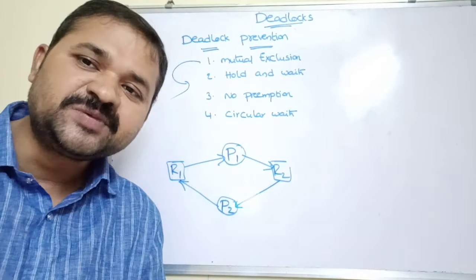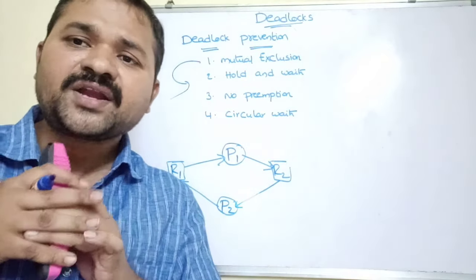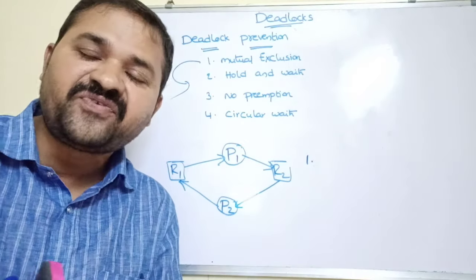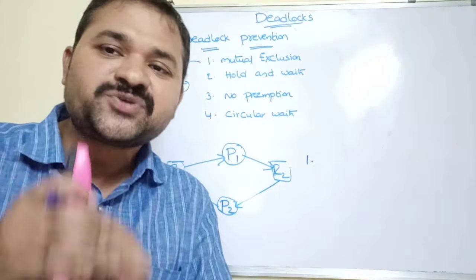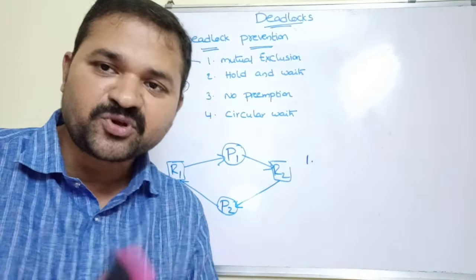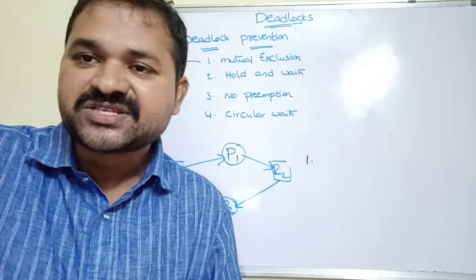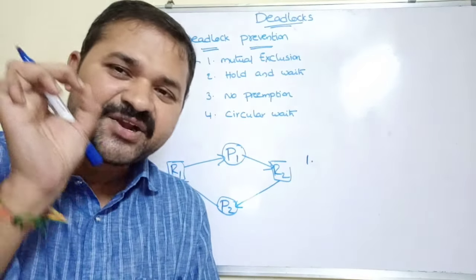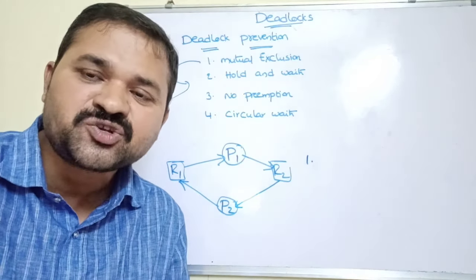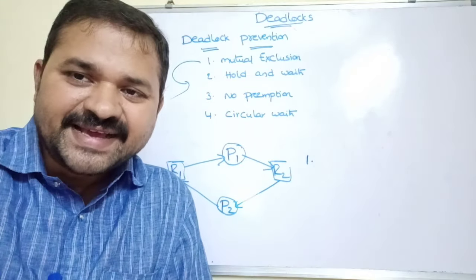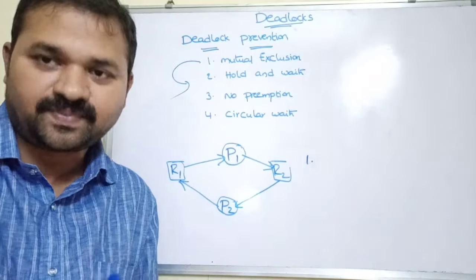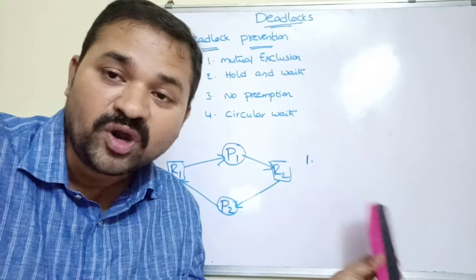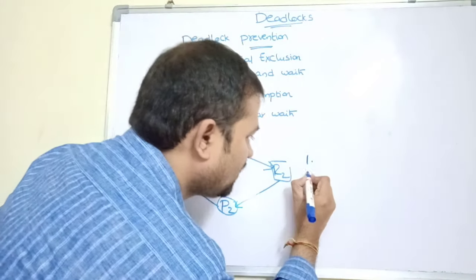Now let's check whether we can eliminate hold and wait. There are two approaches. The first approach is: a process can request for a resource only when that process is holding no resources. So if the process doesn't hold any resources, then only it can put a request for other resources. Here there is only wait — there is no hold situation — so we can eliminate hold and wait in this way.